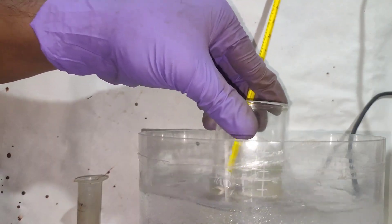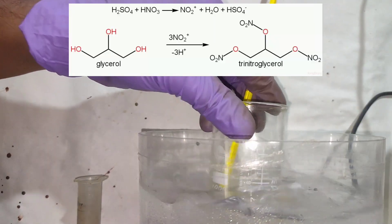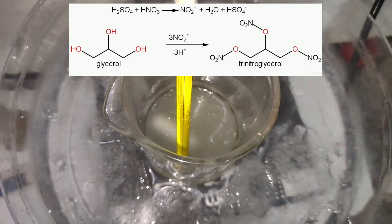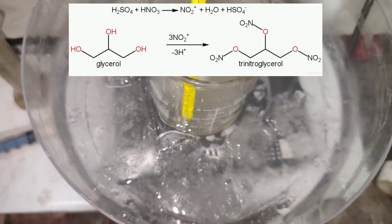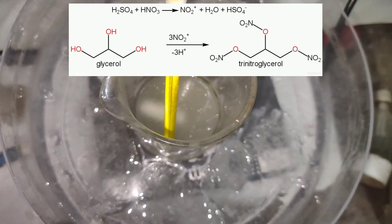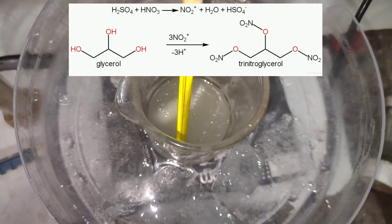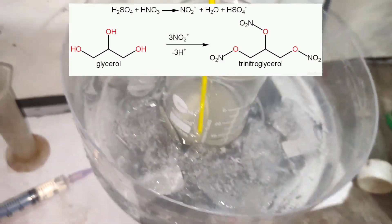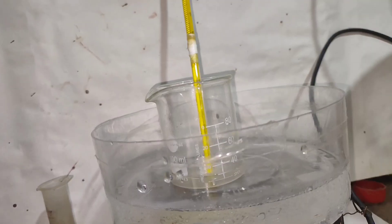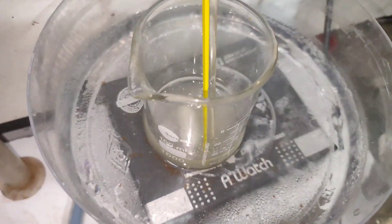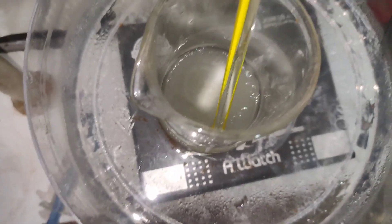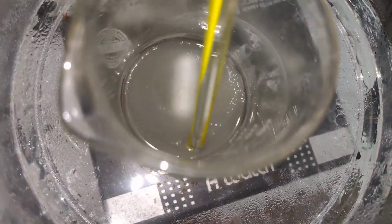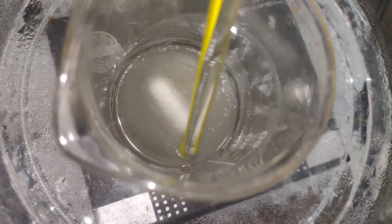So what is going here is an esterification reaction. First the nitronium ion is generated. It then attacks the oxygen of the OH group and the positive charge is neutralized by the release of H+ ion. Thus a nitrate ester is formed. The same attack happens on the 3 OH groups. This happens best at temperature between 18 to 20 degrees Celsius. When trinitroglycerin is formed, it is indicated by an oily layer over the reaction mixture.